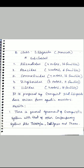Subclass B, Liliopsida (all monocots), is divided into five subclasses: Alismatidae with 4 orders and 16 families; Arecidae with 4 orders and 6 families; Commelinidae with 7 orders and 16 families; Zingiberidae with 2 orders and 9 families; and Liliidae with 2 orders and 19 families. It is proposed by Cronquist that Liliopsida have arisen from aquatic ancestors. This is a broad outline of Cronquist's system of classification.